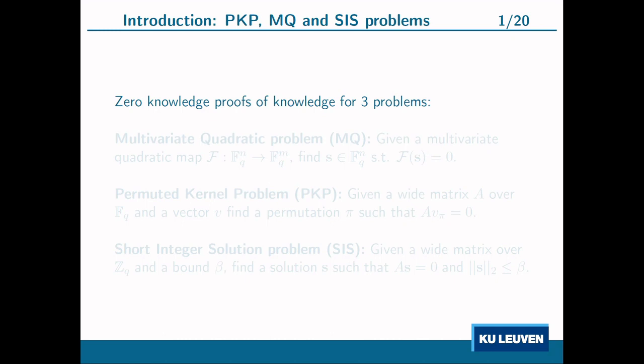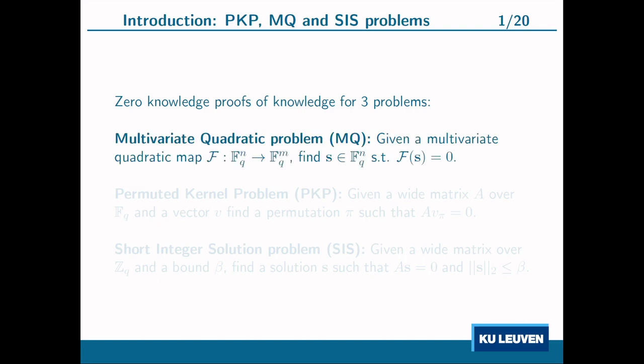The main contribution of this paper is the construction of zero-knowledge proofs of knowledge for three problems. The first is called the multivariate quadratic problem, where we are given a multivariate quadratic map F — a list of M quadratic equations in N variables — and the goal is to find a vector S such that F(S) is equal to zero.